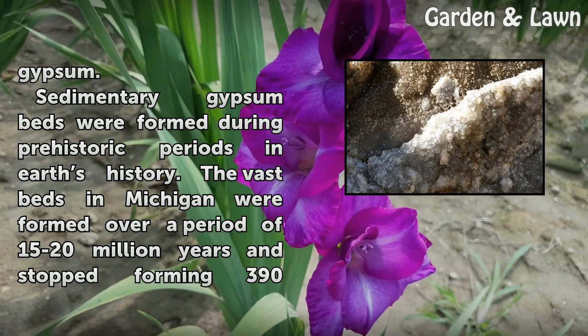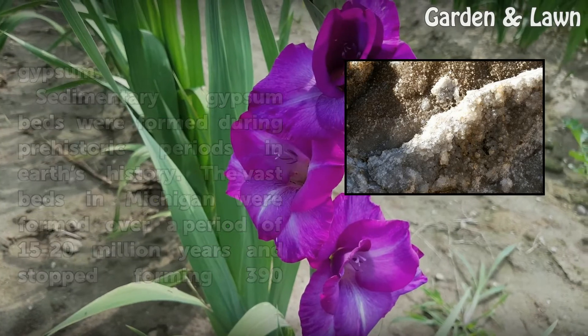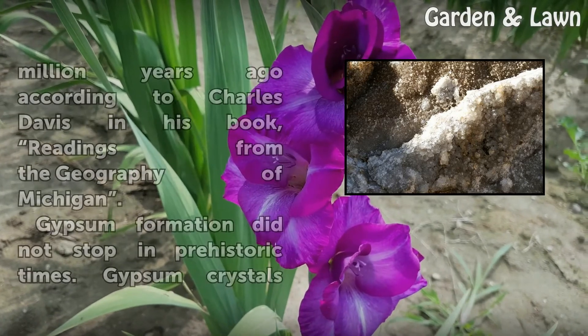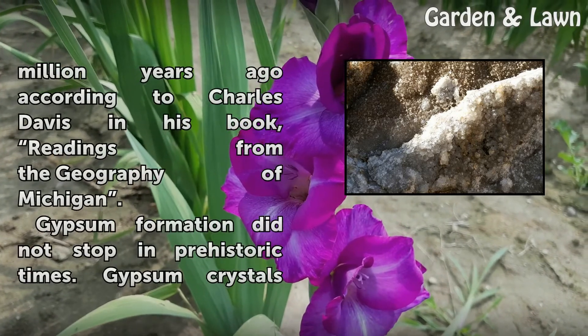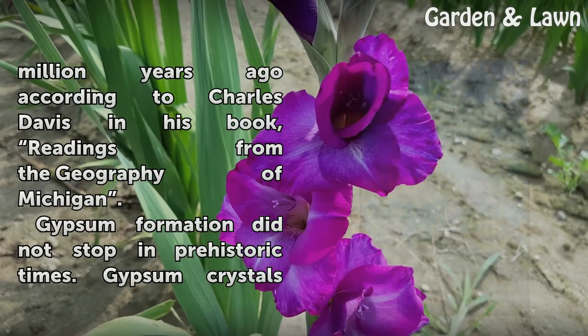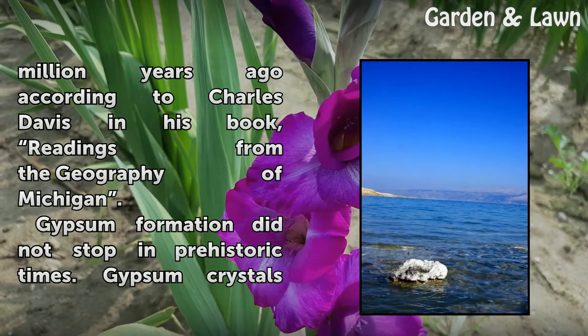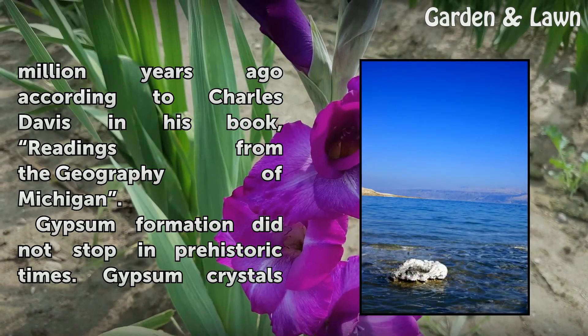Sedimentary gypsum beds were formed during prehistoric periods in Earth's history. The vast beds in Michigan were formed over a period of 15 to 20 million years and stopped forming 390 million years ago, according to Charles Davies in his book Readings from the Geography of Michigan.